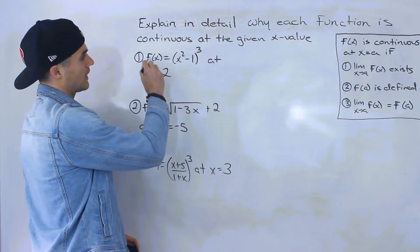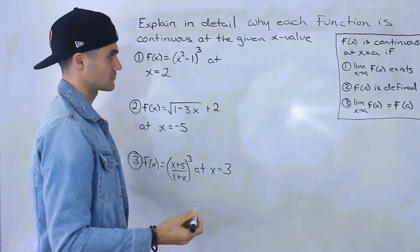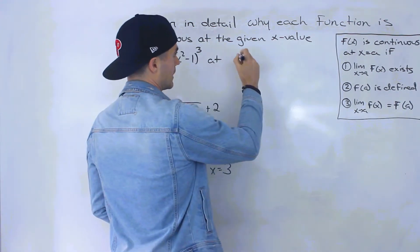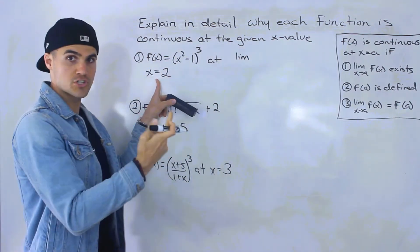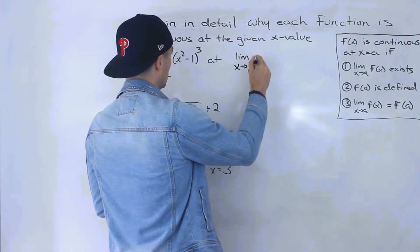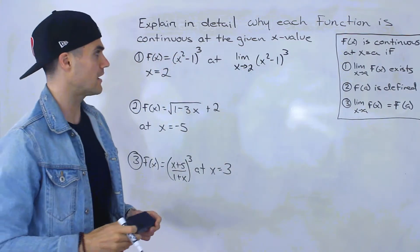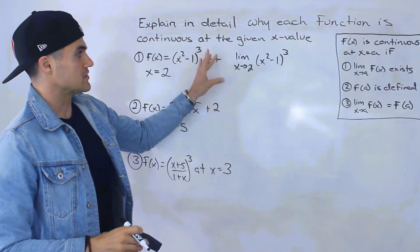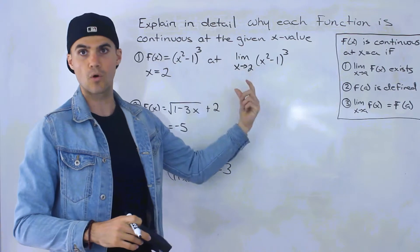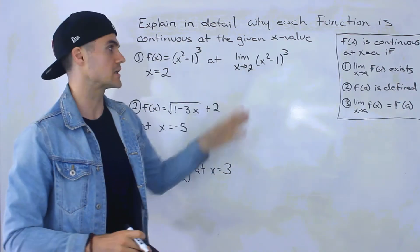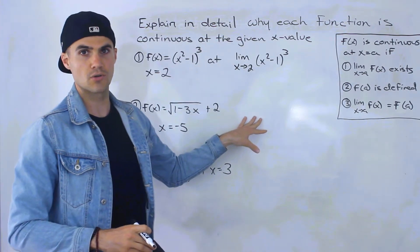Number one, we have f(x) = (x² - 1)³ at x = 2. The first condition is we have to show that the limit as x approaches 2 of (x² - 1)³ exists. You may think to just directly substitute 2 here — you'd get 2² = 4, minus 1 is 3, and 3³ is 27. But I'm going to use properties of limits to show this.